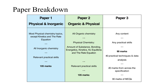The first step in prioritizing your revision for Paper 2 is to know which topics could be assessed. Paper 2 is about organic and physical chemistry, so all of organic chemistry could be assessed. In terms of physical chemistry, there are a number of topics: amount of substance, bonding, energetics, kinetics, Kc equilibria, and the rate equation. You'll notice as we work through this video that the physical chemistry topics are particularly important.